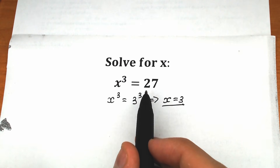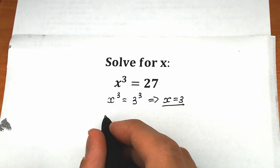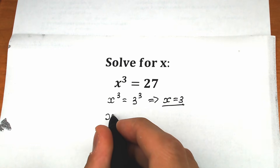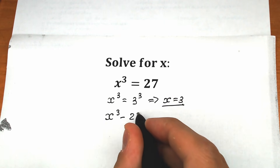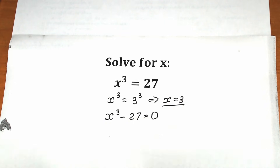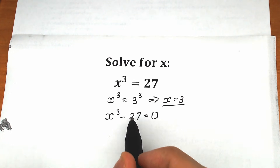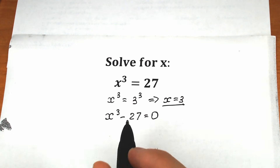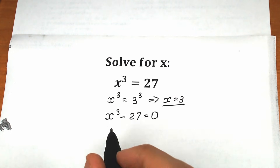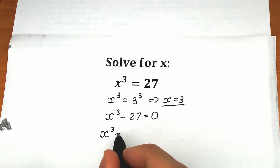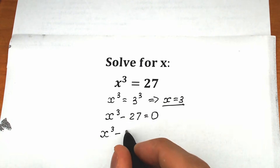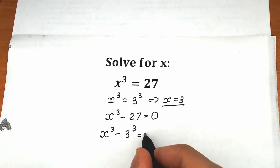First of all, let's bring this 27 from our right side to the left side. So what we have right here is x cubed minus 27 equals 0. Now let's write 3 cubed instead of 27, so we have x cubed minus 3 cubed equals 0.